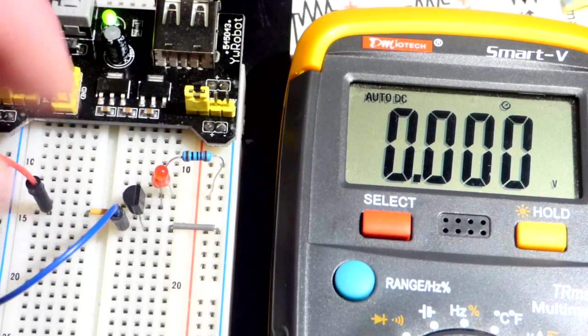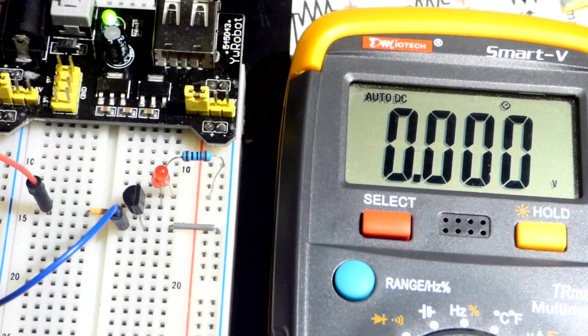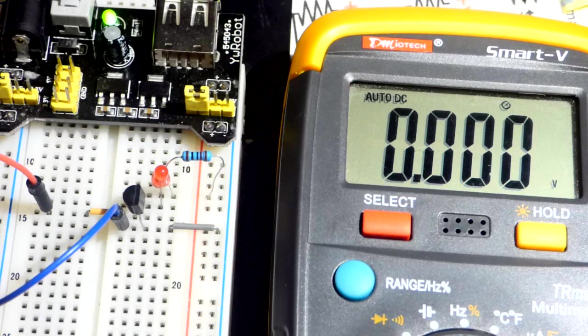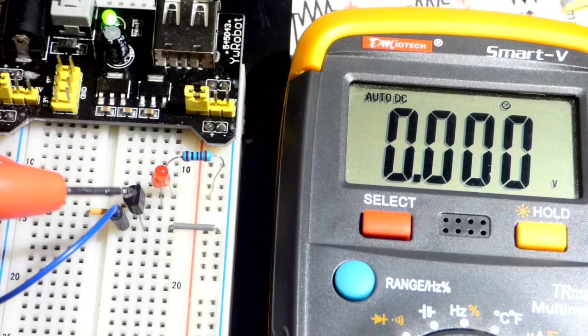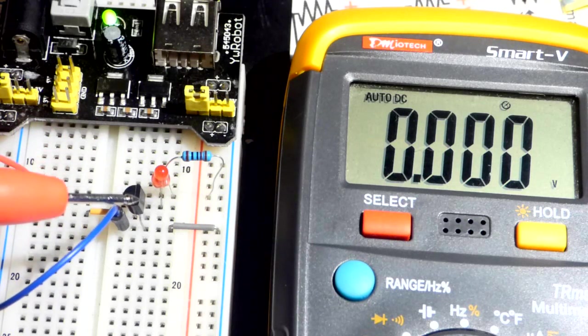So, the component, the reason why it's called P-channel is the source to gate, since the source is more positive in this one. It's a P-type material going across there.